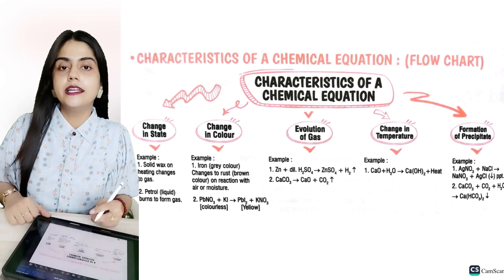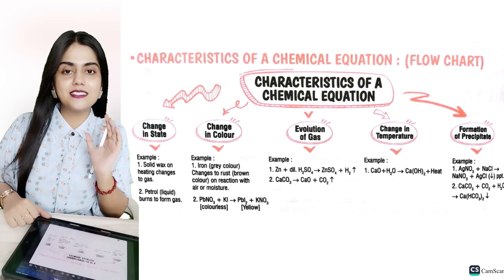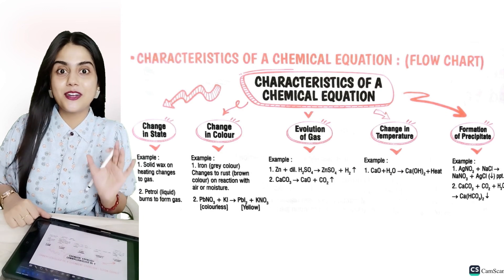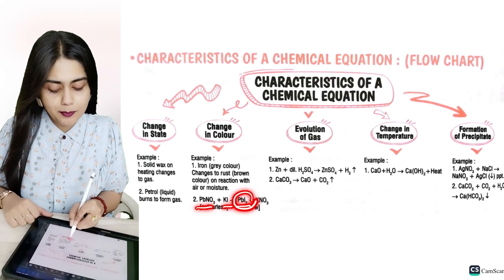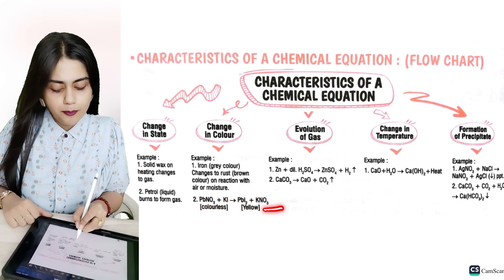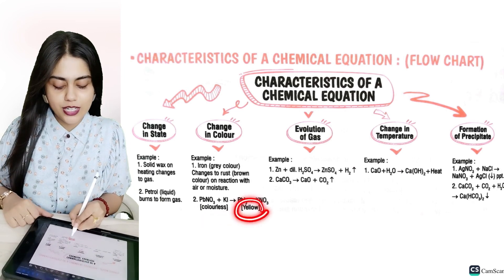The other thing happens is change in color. When we have chemical reaction, it will change our colors. This means there is a chemical reaction here. If we talk about PbNO3 plus KI, then we have PbI2 lead iodide plus KNO3. First of all, this is colorless but it has changed our color to yellow color.